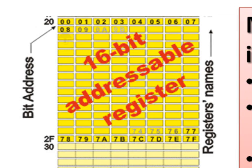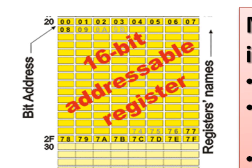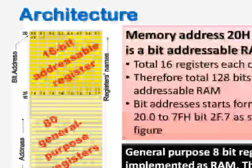The bit 0 of address 20 has bit address 00, bit 1 of address 20 has bit address 01, and so on up to address 7F. So from 00 to 7F there are 128 bits which can be addressed independently. This is the bit addressable RAM.